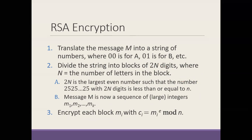Here's how you implement RSA. You have a message M — basically a string of characters. You translate the message M into a string of numbers where we use a two-digit encoding, starting with 00 for A, 01 for B, and so on. We use two digits because we have 26 letters. So the letters are always numerically one less than you might expect — A corresponds to 00.